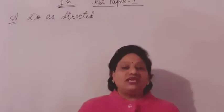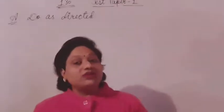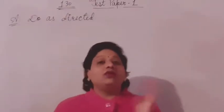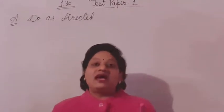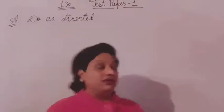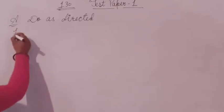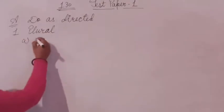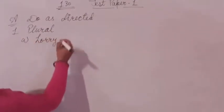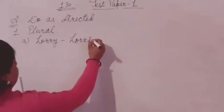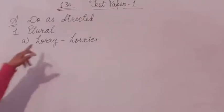When we change one noun into more than one, it becomes a plural. For example, 'lorry' becomes 'lorries.' Lorry is about one thing, and when we put 's' or 'es' after a noun, it becomes plural. The first topic is about plural. The first word is 'lorry' — here 'y' is at the end. The rule is: we remove 'y' and put 'ies' after it. So lorry becomes lorries.